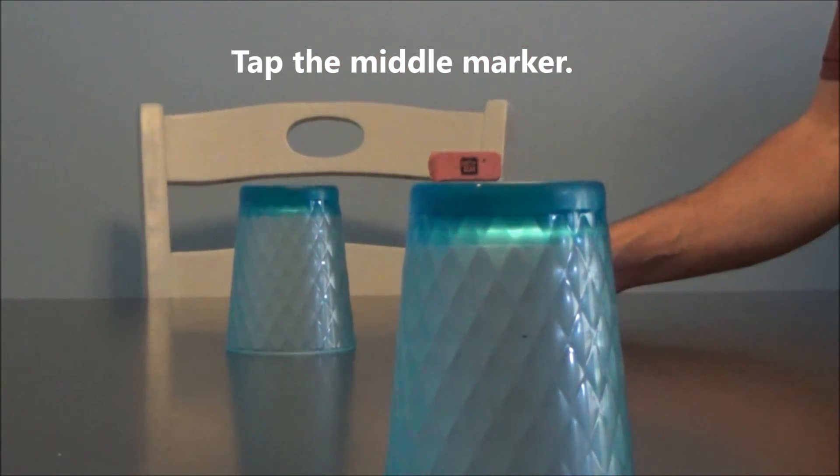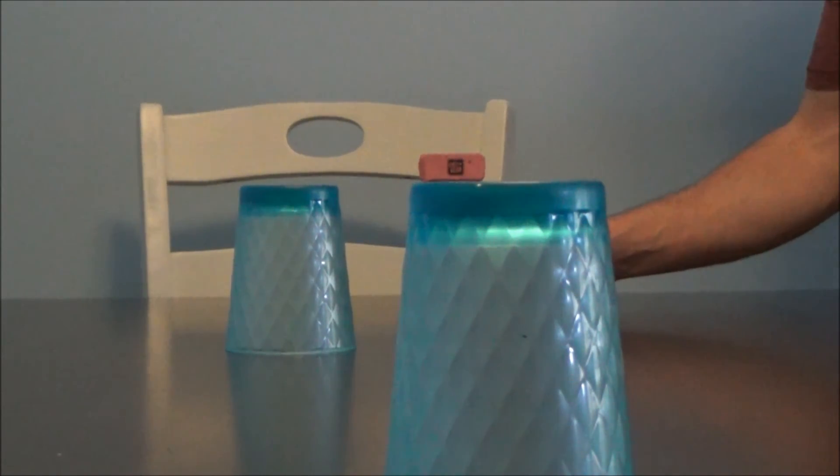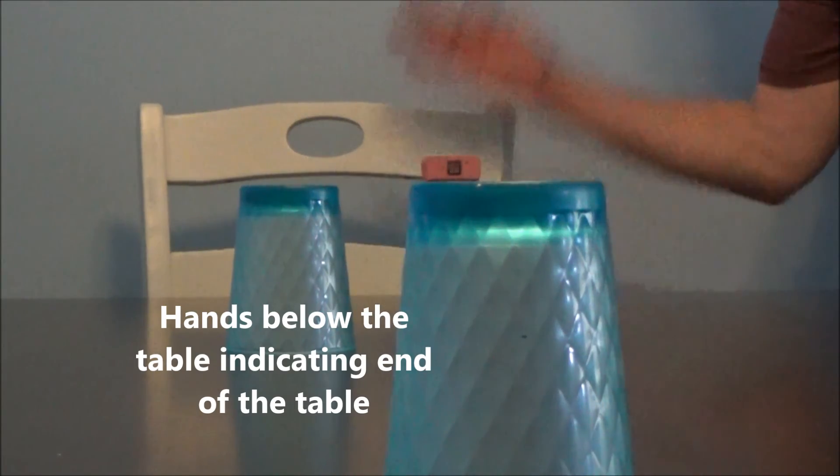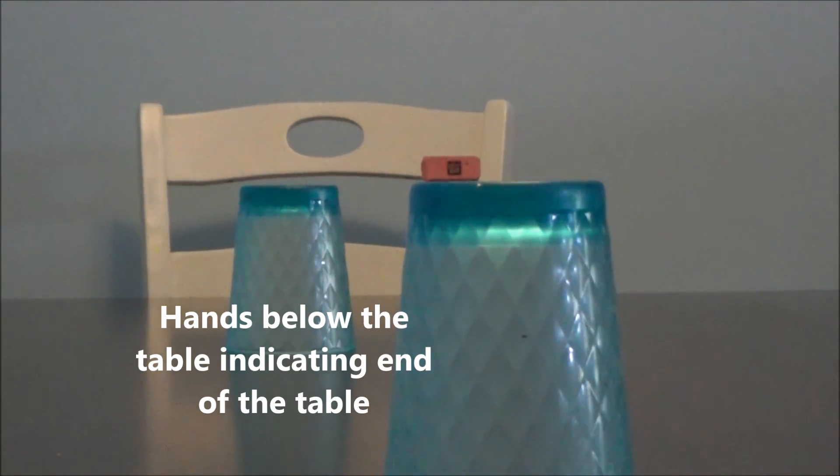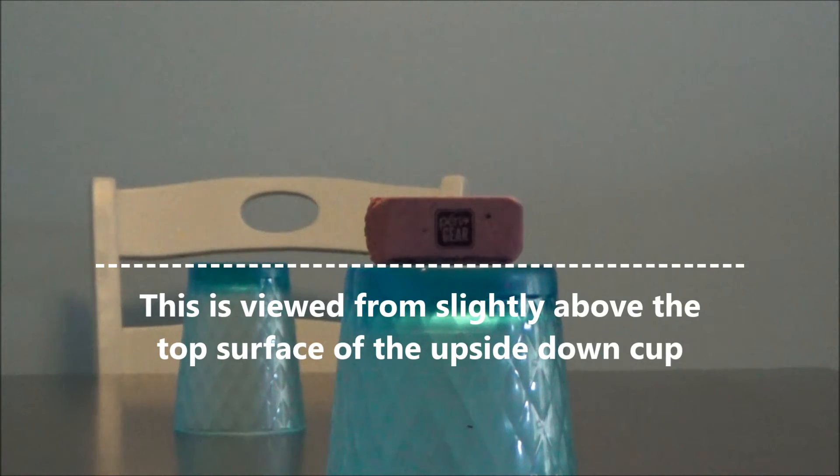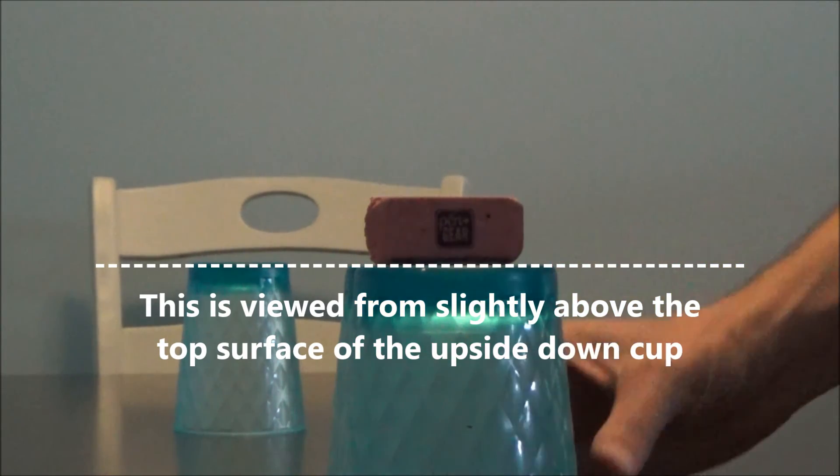Hands below the table indicates the end of the table. This is viewed from slightly above the top surface of the upside-down cup.